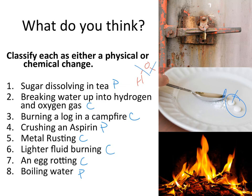Metal rusting is a chemical change — it's very hard to reverse, which is why body shops stay in business. Metal rusting is caused by exposure to oxygen, moisture, and some electrolytes, and that causes the change in the metal.